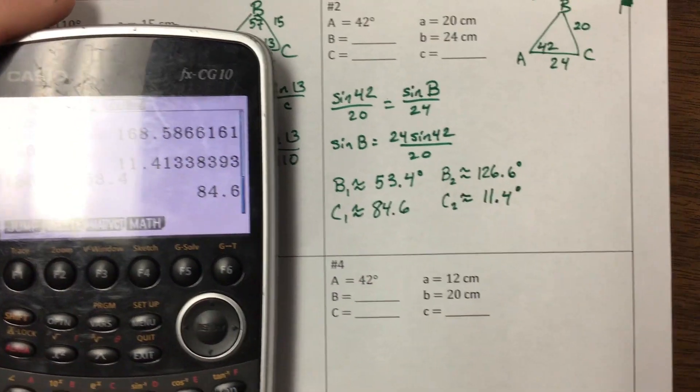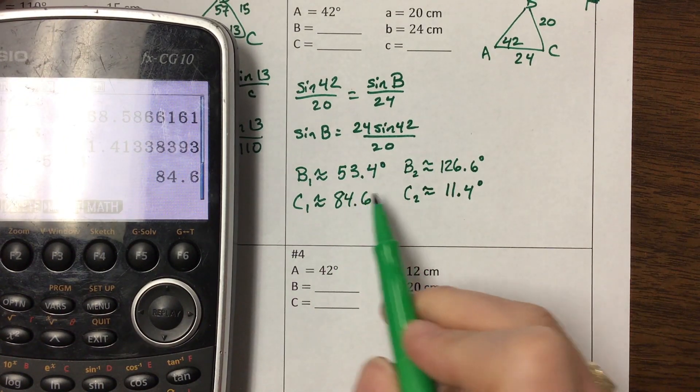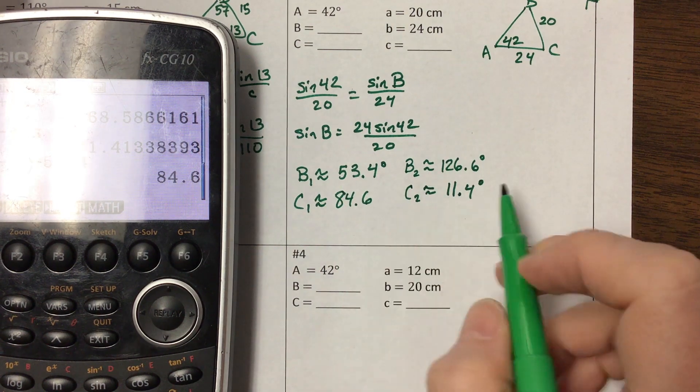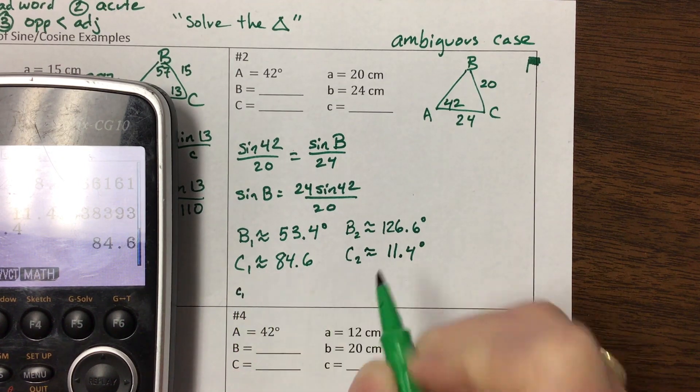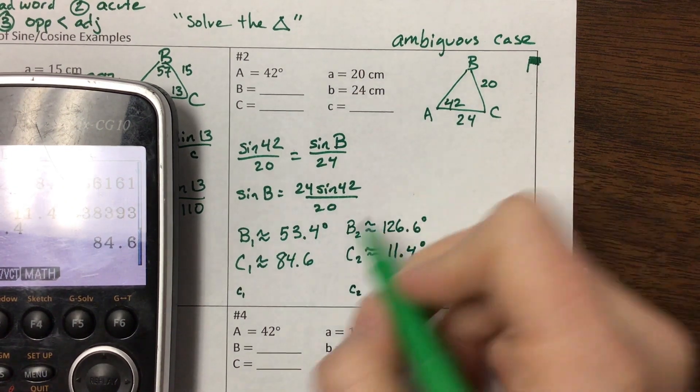So you'll notice on this particular triangle, we have two distinct triangles. This one is the acute angle, the acute triangle, and this one is the obtuse triangle. So then the next thing we need to do is we need to find little c1 and little c2. I don't know why I had to say it like that. It is what it is.